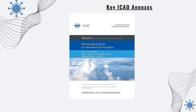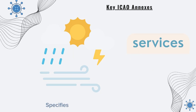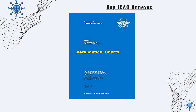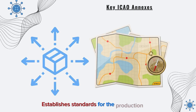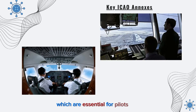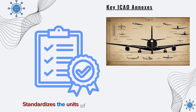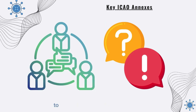Annex 3, Meteorological Service for International Air Navigation, specifies the meteorological services required for safe flight operations. Annex 4, Aeronautical Charts, establishes standards for the production and distribution of aeronautical charts, which are essential for pilots and air traffic controllers. Annex 5, Units of Measurement to be Used in Air and Ground Operations, standardizes the units of measurement used in aviation to ensure clear communication and avoid misunderstandings.